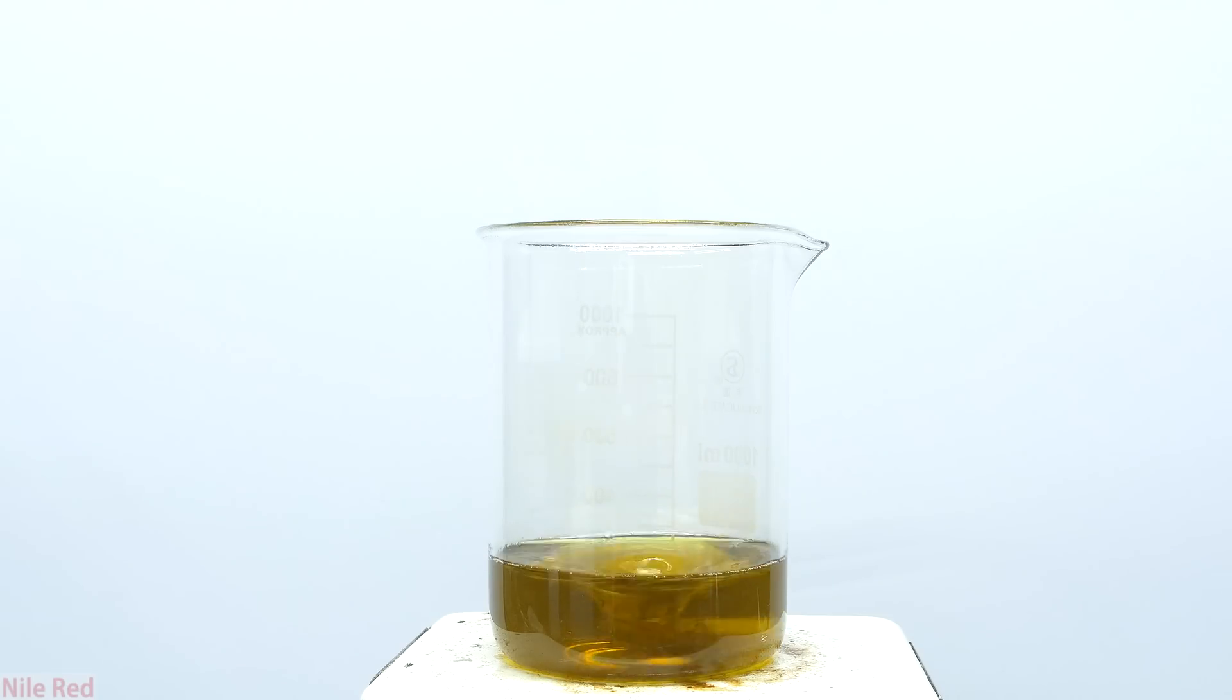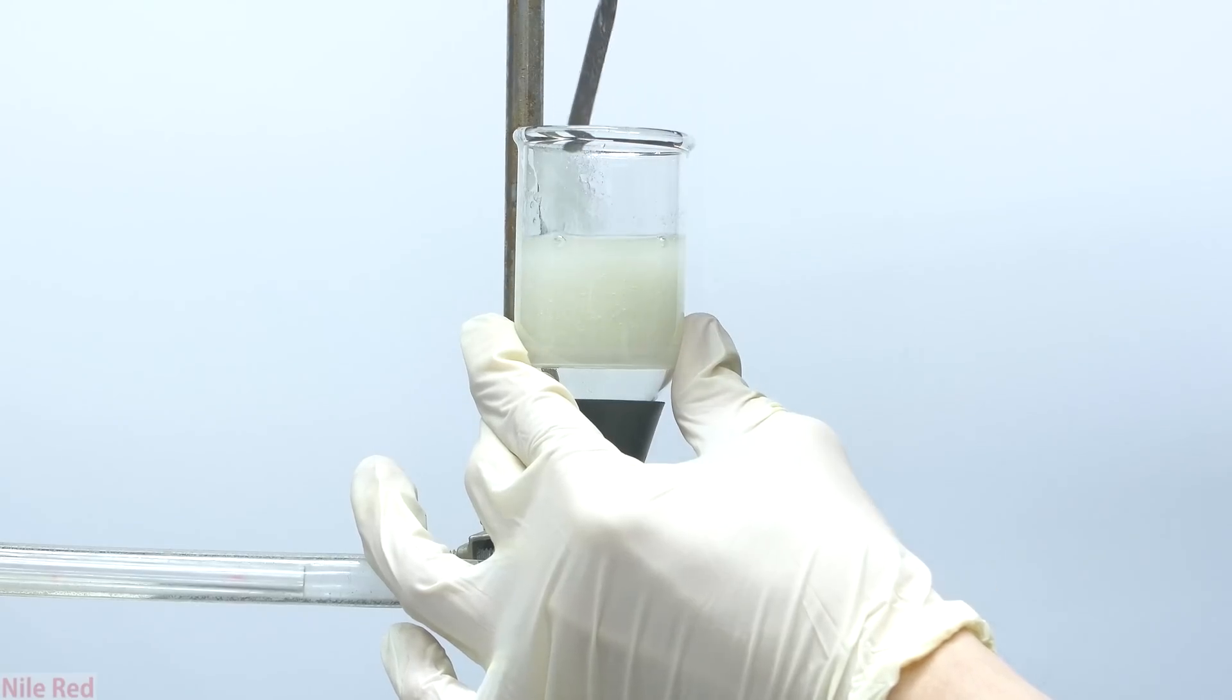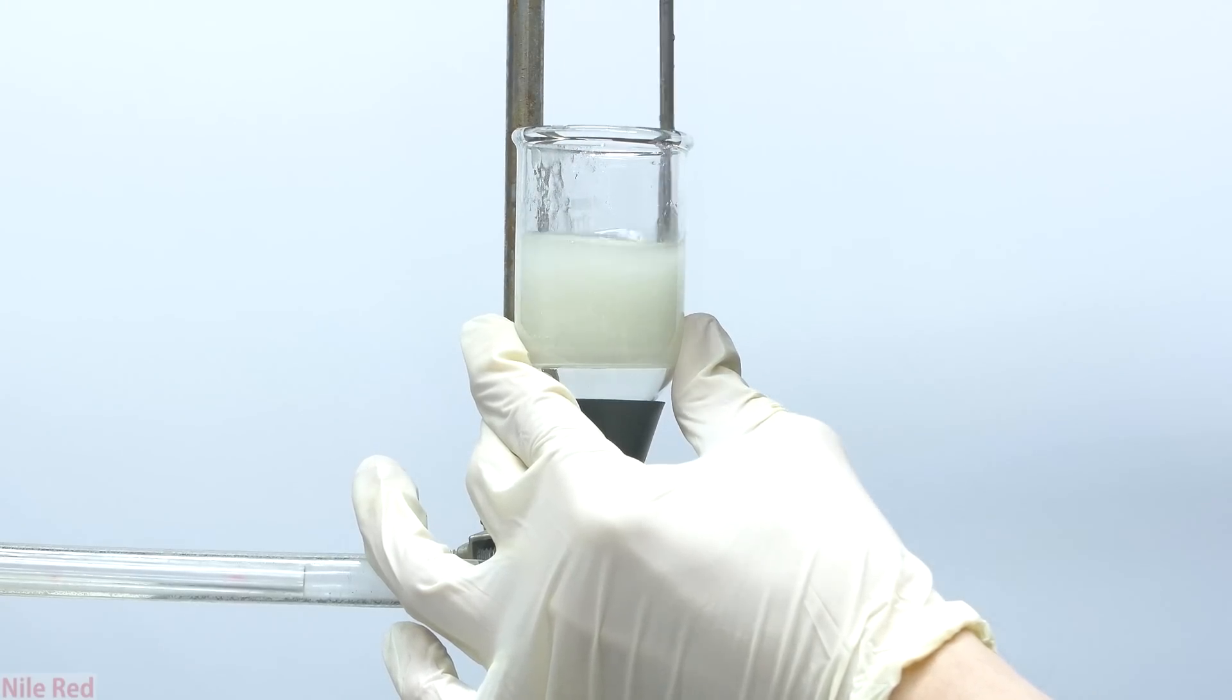Oxalic acid is the reason why it's bad to drink antifreeze or eat rhubarb leaves. Rhubarb leaves themselves contain a lot of oxalic acid, and antifreeze, which is also known as ethylene glycol, is broken down into oxalic acid in your body.